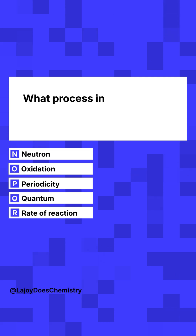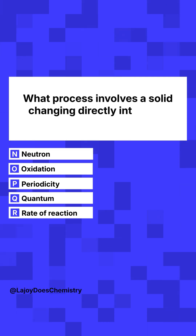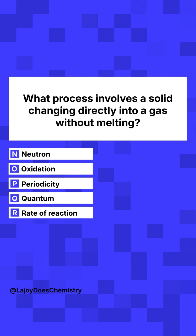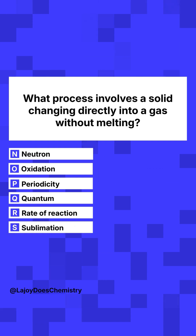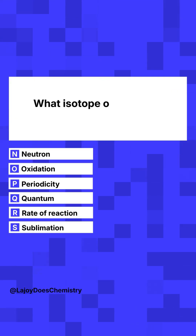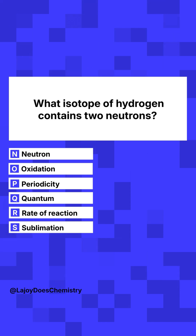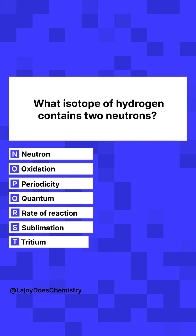S. What process involves a solid changing directly into a gas without melting? Sublimation. T. What isotope of hydrogen contains two neutrons? Tritium.